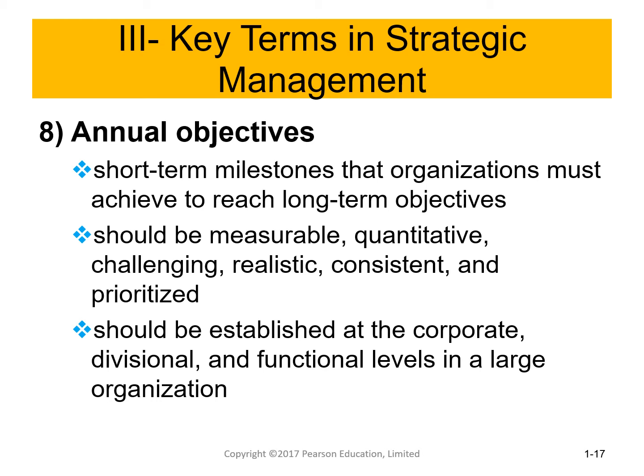Annual objectives are short-term milestones that organizations must achieve to reach long-term objectives. If I set long-term objectives for 3 or 5 years, I must break them into annual milestones. If results at the start of the year are off-track, I make modifications to stay on course toward the long-term objective. Annual objectives must also be measurable, quantitative, challenging, realistic, consistent, and prioritized. They exist at different levels: corporate level, divisional, and functional.